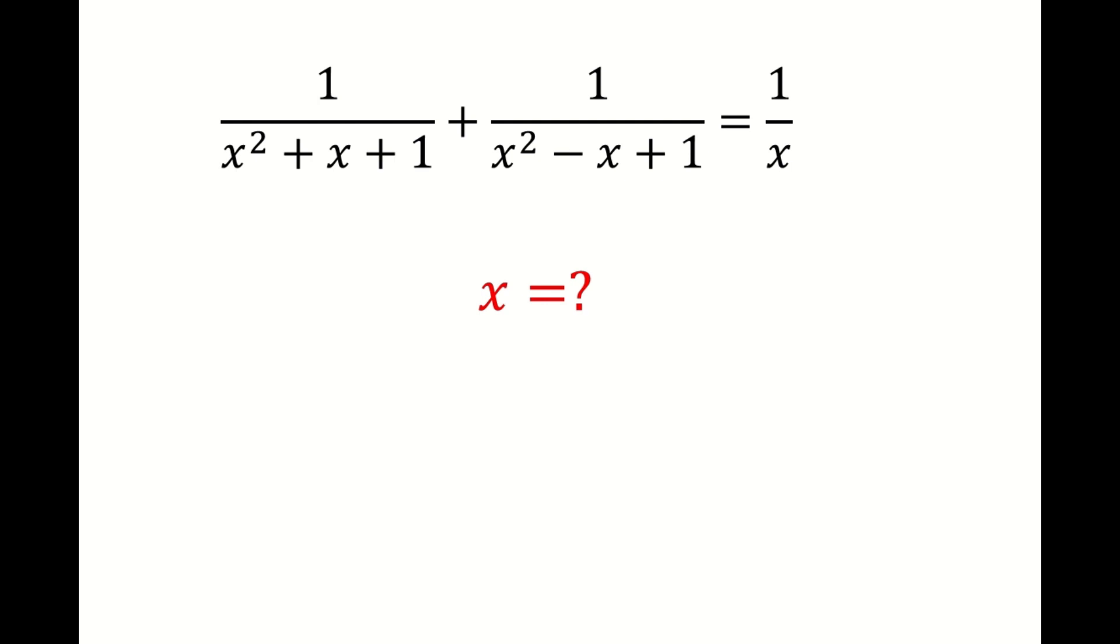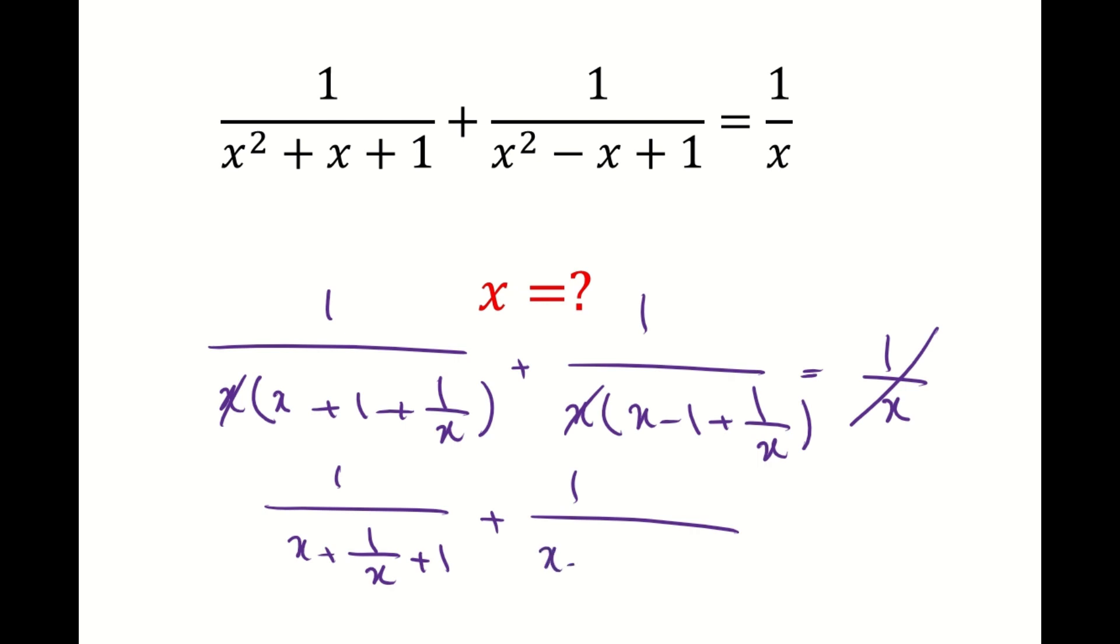To solve this, I am going to start with simplifying the equation itself. I am going to factor out x from each term that I have on the left hand side. For the first one, it is going to be 1 over x times x plus 1 plus 1 over x, plus 1 over x times x minus 1 plus 1 over x. I can remove 1 over x from both sides. So at the end, I will end up with 1 over x plus 1 over x plus 1 plus 1 over x plus 1 over x minus 1 equals 1.